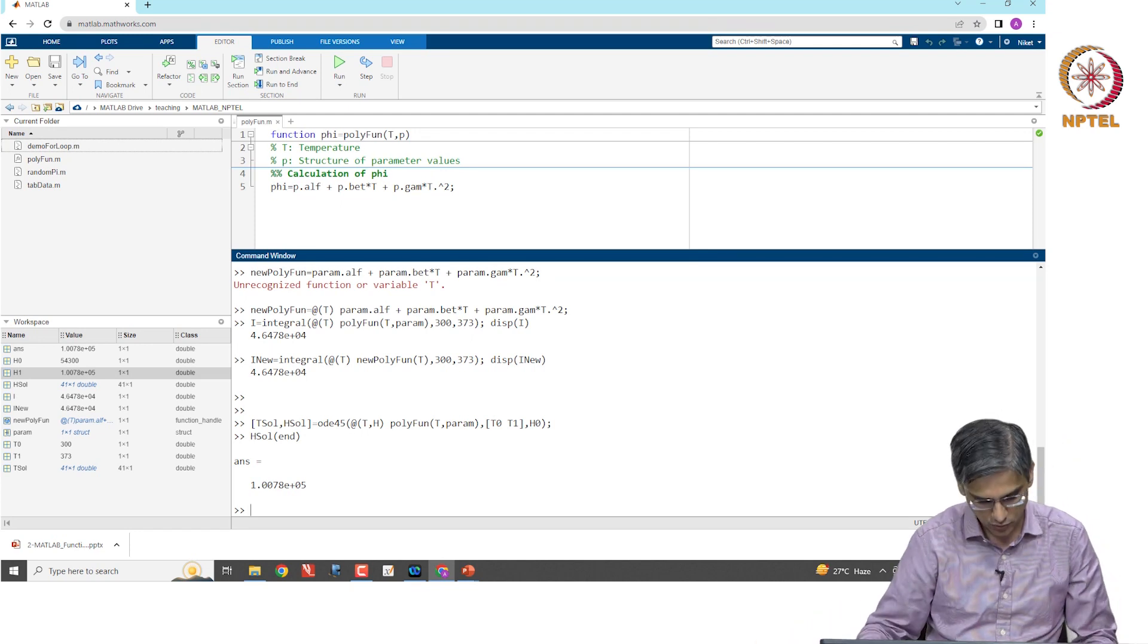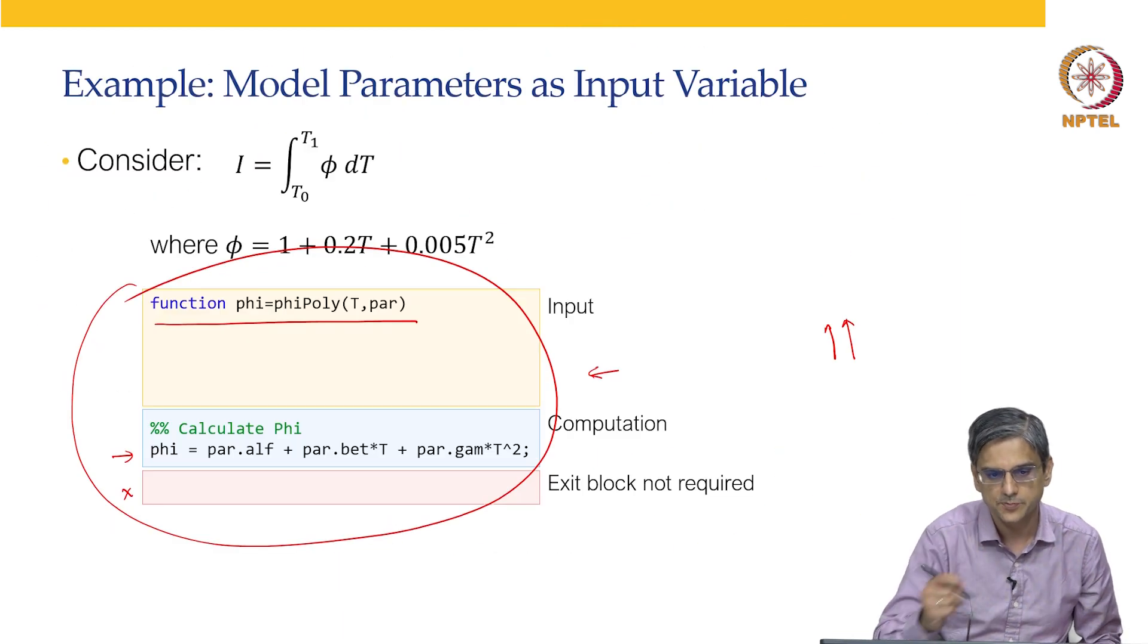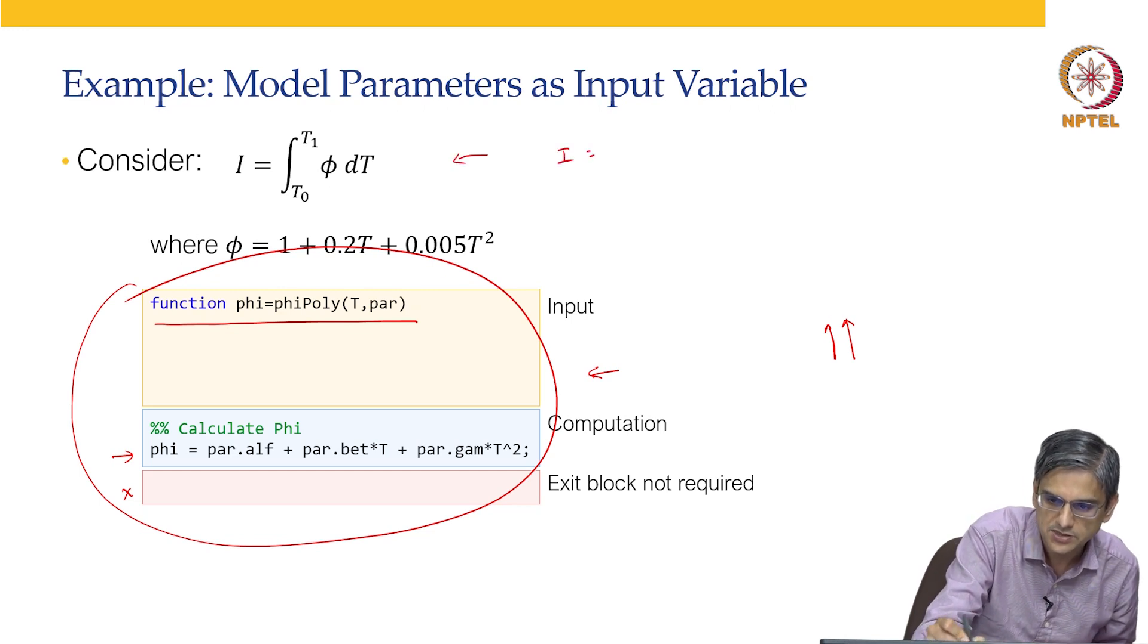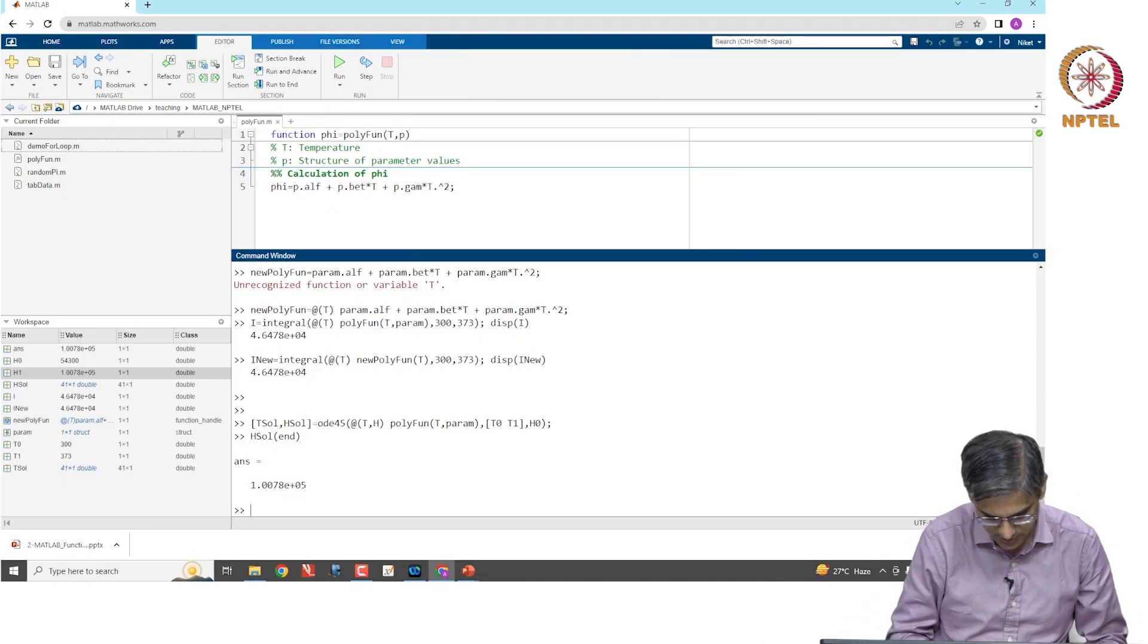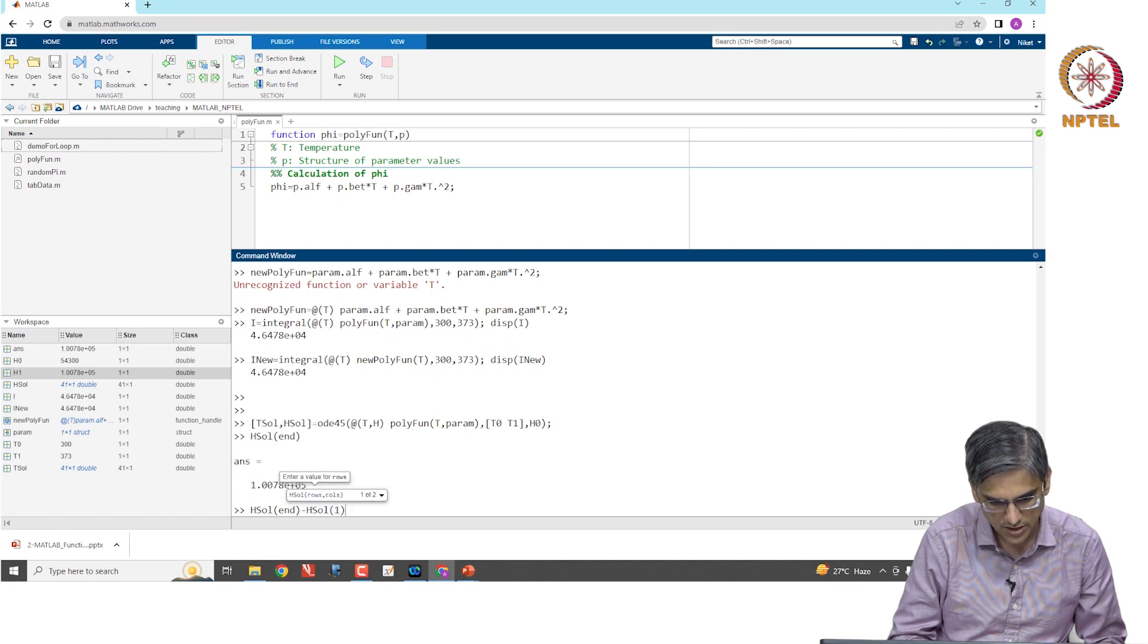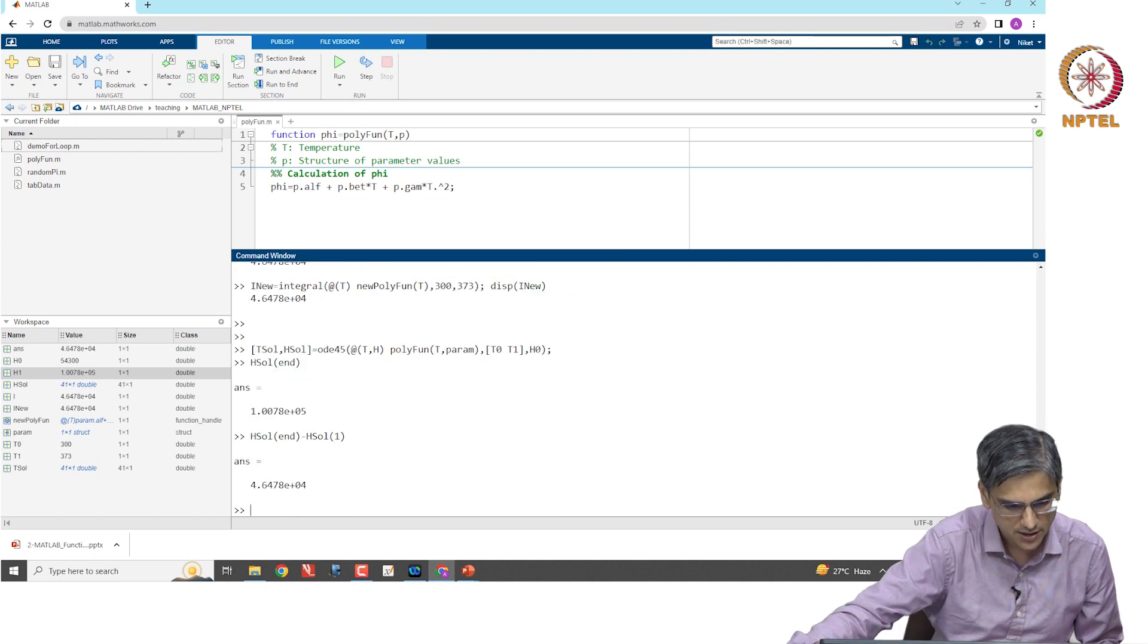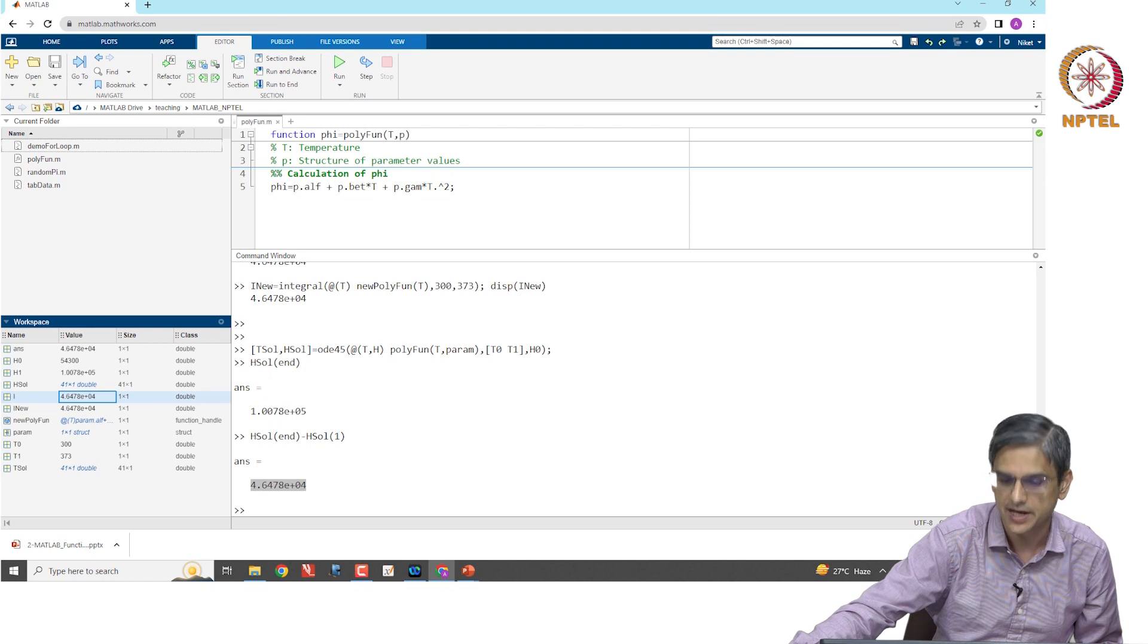Now, if you note that the integral value when you did this particular integration, the integral value i is going to be nothing but h1 minus h0. So let us try out what that gives us: hsol(end) minus hsol(1). That should give us the value close to or equal to i. Let us see what we get. That value is 4.648 into 10 to the power 4, which is exactly same as what we got with i.